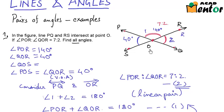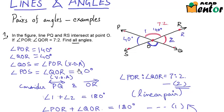Angle QOS is vertically opposite to angle POR. So angle QOS equals angle POR — because of vertically opposite angles (write the full term, not just VOA). Hence angle QOS also equals 140 degrees. So here are all four angles. This was simple! Let's look at another example.